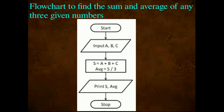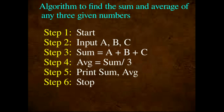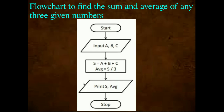Now, to find the sum and average of any three given numbers using a flowchart. Start — the oval shape is the terminal symbol. Input A, B, C — the input symbol is the rhombus symbol. This is the input box with statement: Input A, B, C.